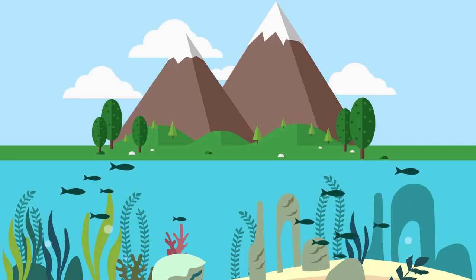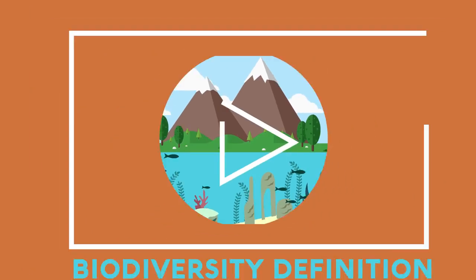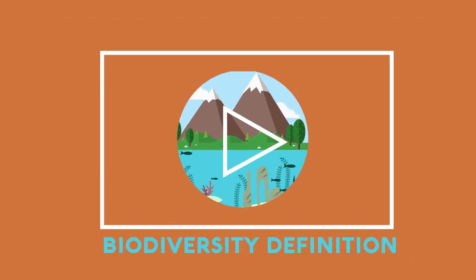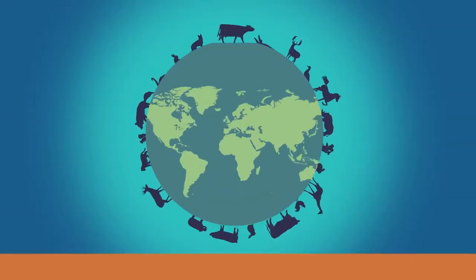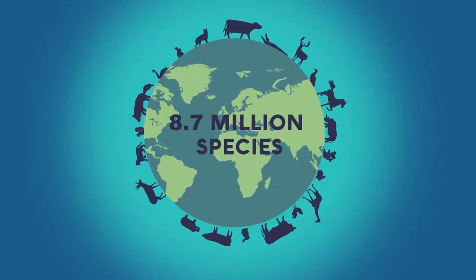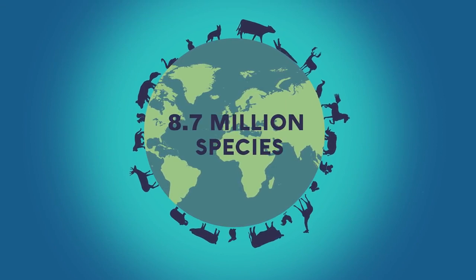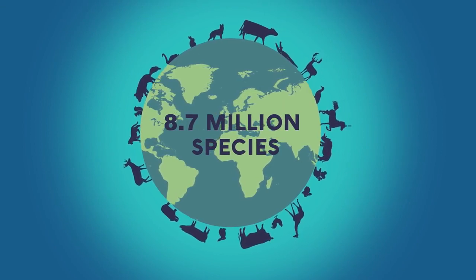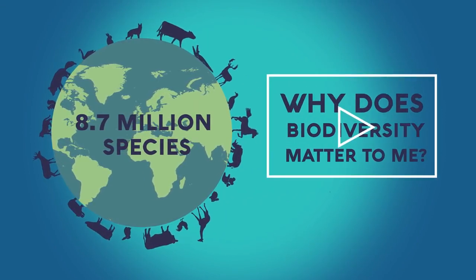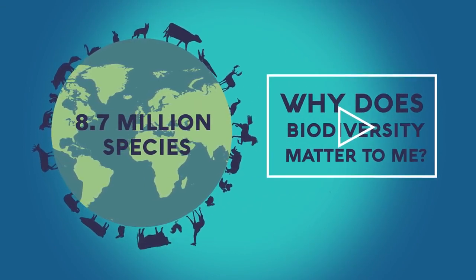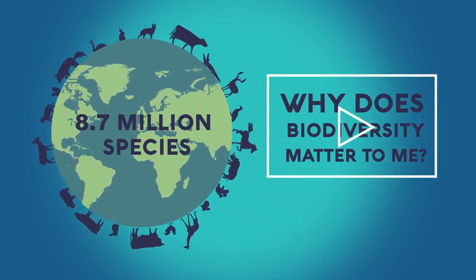Biodiversity is the variety of life, as we saw in this video. There are thought to be 8.7 million species on planet Earth, and biodiversity is of utmost importance to humans.